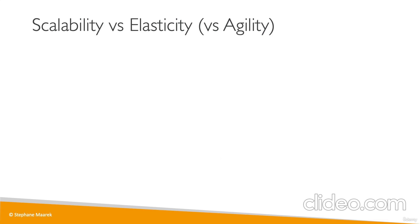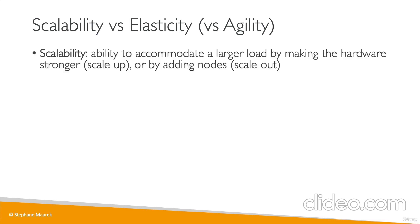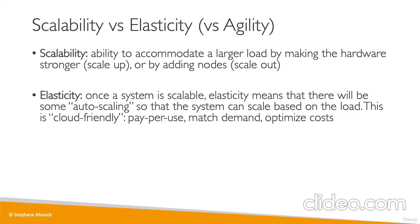The exam will ask you to distinguish scalability, elasticity, and agility. Scalability is the ability for a system to accommodate a larger load by making the hardware stronger (scaling up) or by adding nodes (scaling out). Elasticity is more cloud-native — once a system is scalable, elasticity means there will be auto-scaling so the system scales based on the load it's receiving, matching demand with servers and optimizing cost.